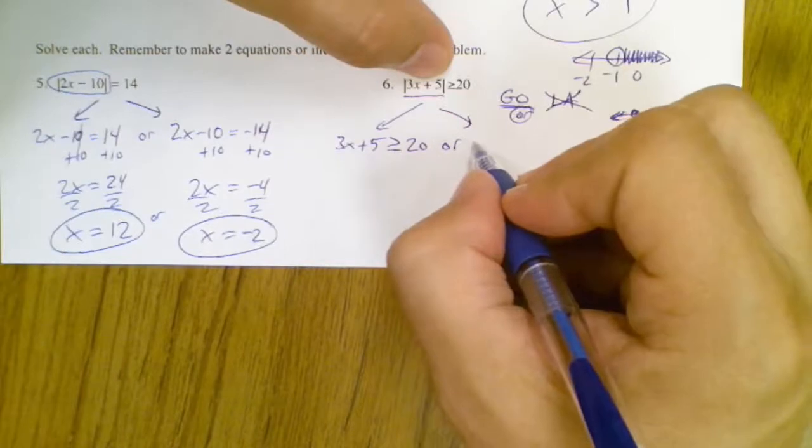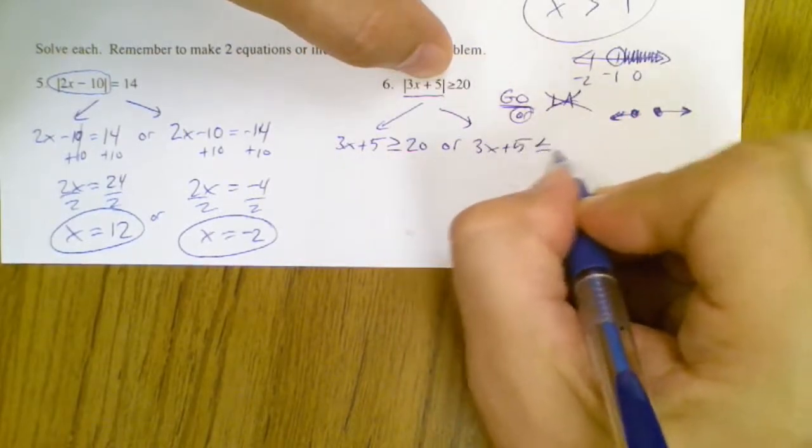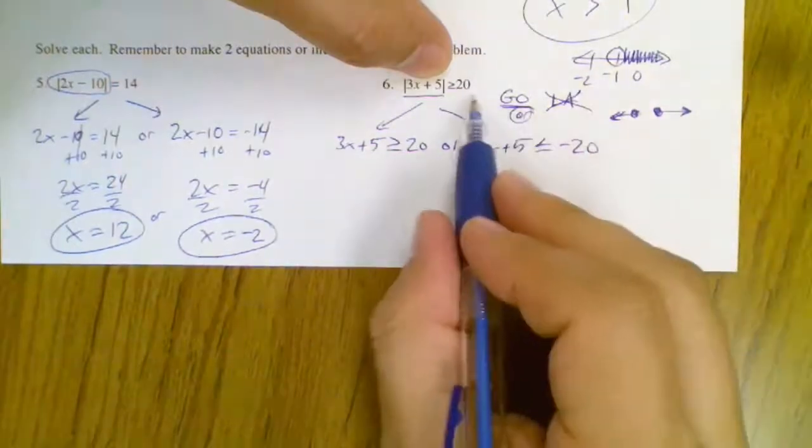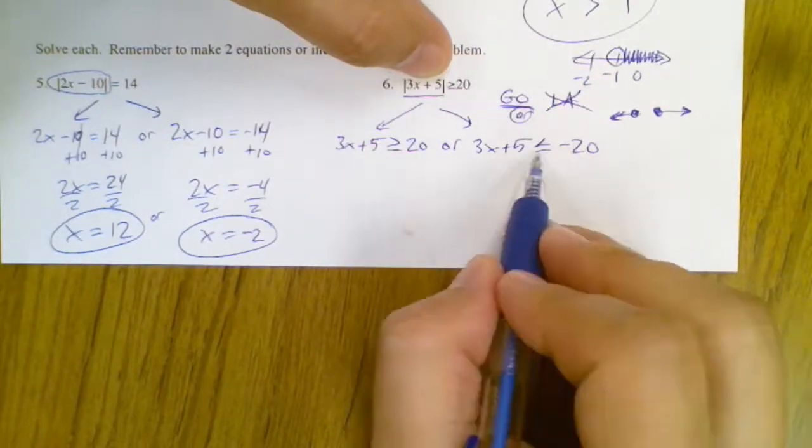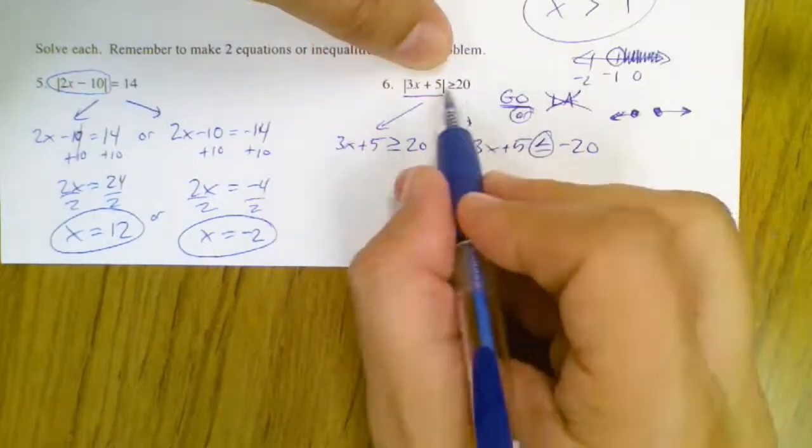see how I have the word or because go la, or 3x plus 5 is less than or equal to negative 20. So not only do I change the symbol, the sign, but I also change the symbol. Check that out, make sure you notice that because it's the opposite of what you see there.